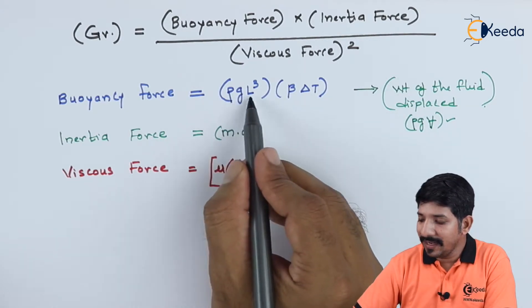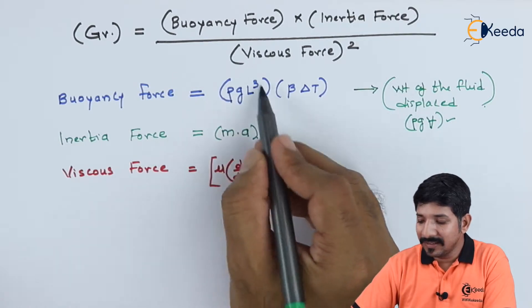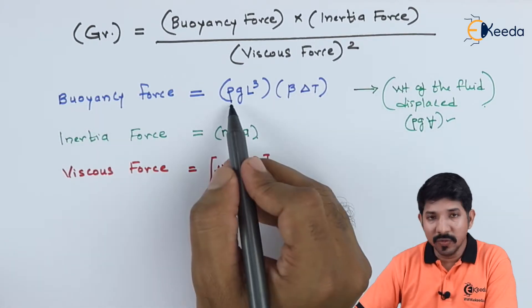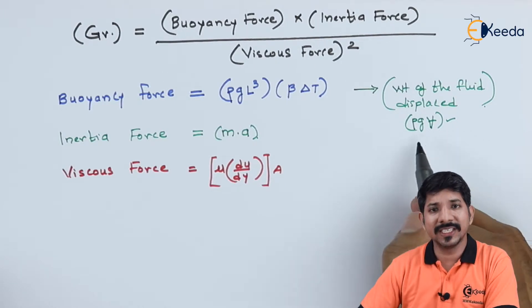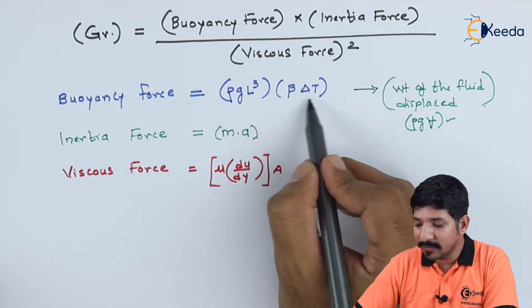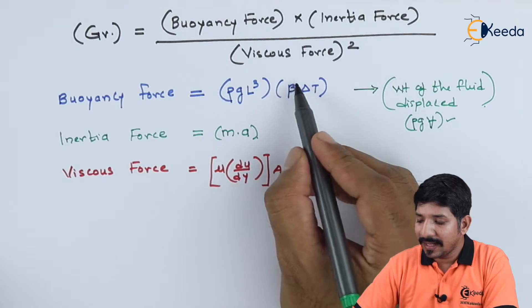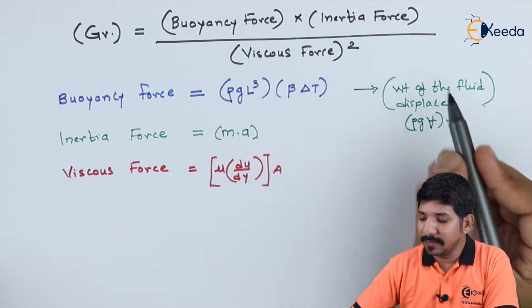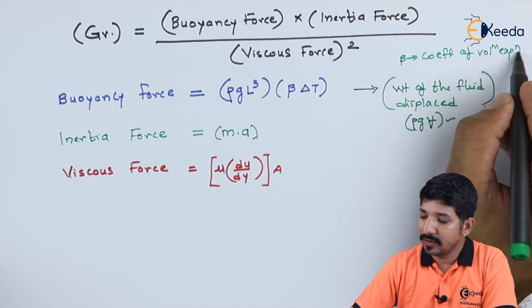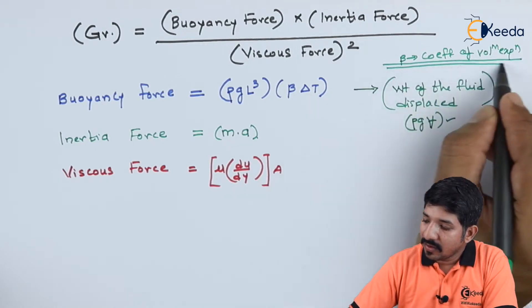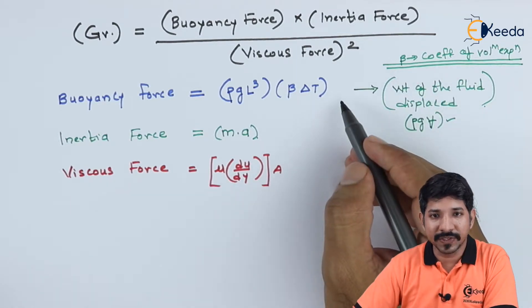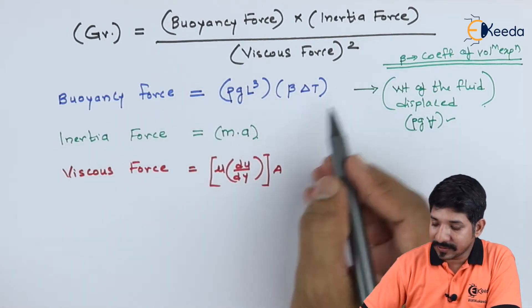So here, rho G and the volume itself is expressed by L cube. So this is my change in volume and then comes the role of change in temperature. The change in volume, buoyant force exists because of the change in density. The change in density itself is the product of change in temperature. That is why we need to incorporate this term over here. So this we are using by a term called beta. That is nothing but coefficient of volumetric expansion. So, this is a measure for the expansion of the fluid with the change in the temperature. So, the buoyant force itself can be expressed by this mathematical expression.